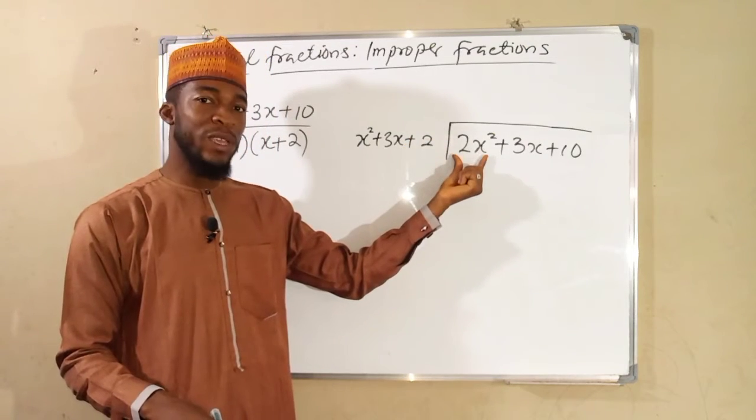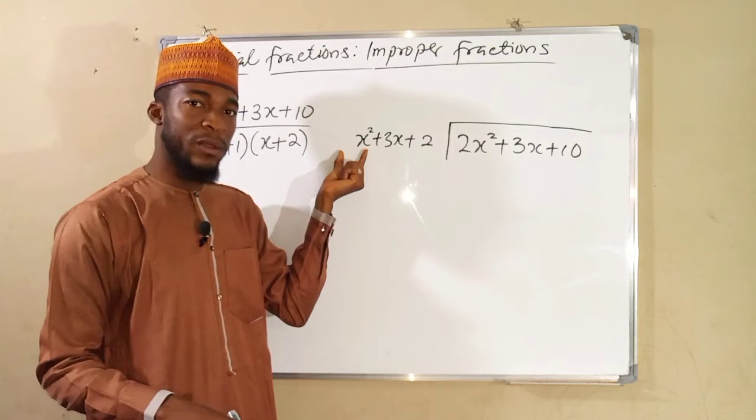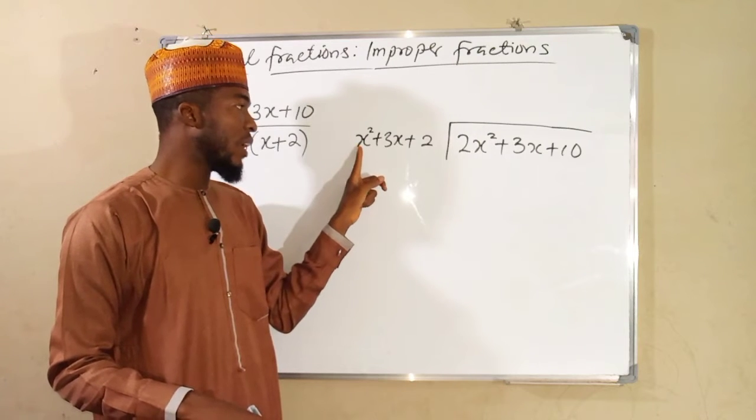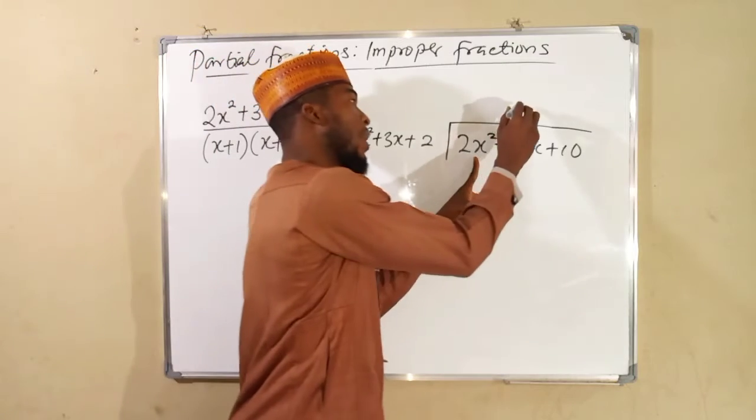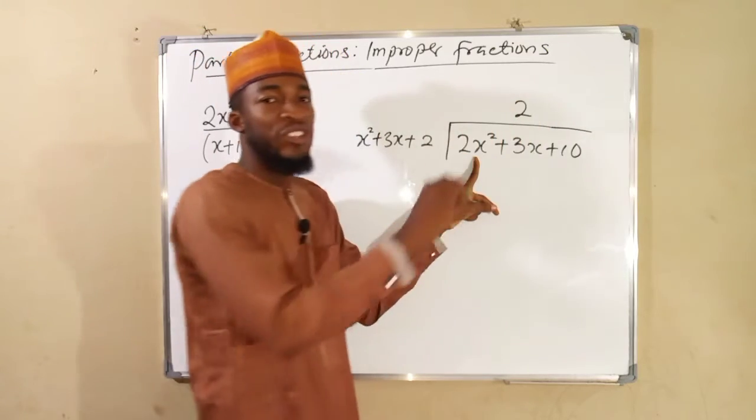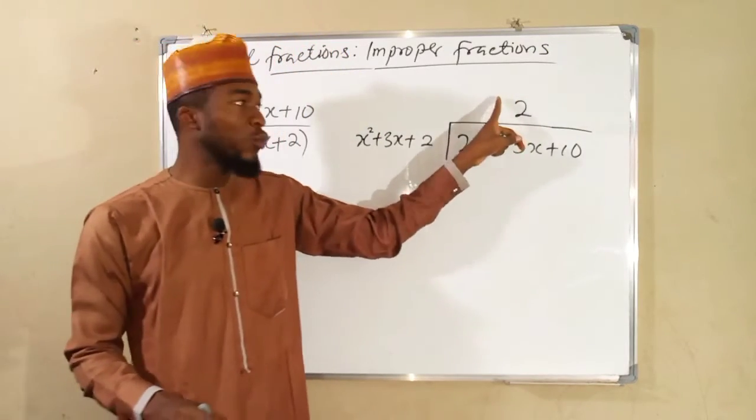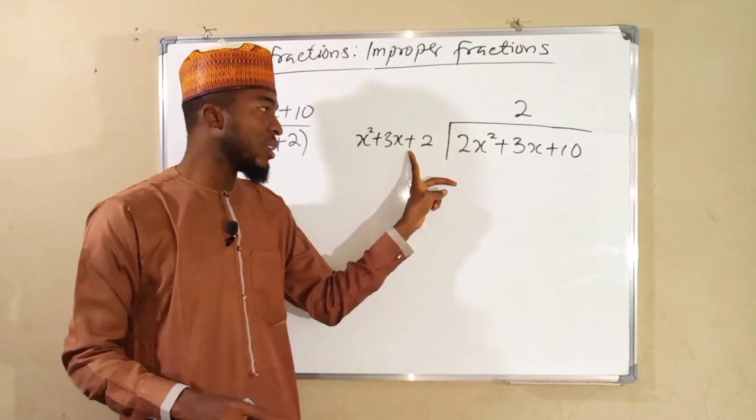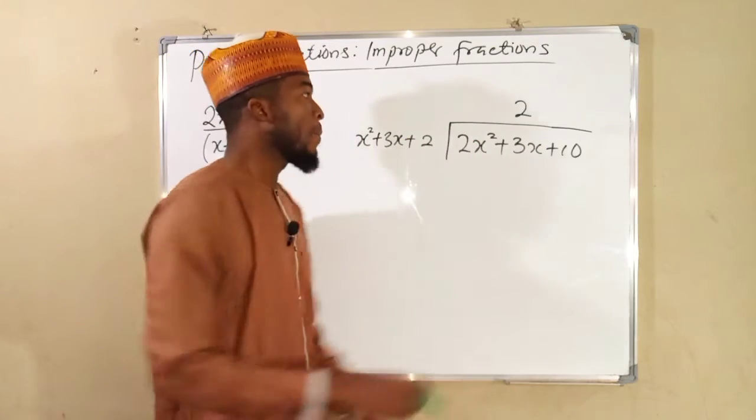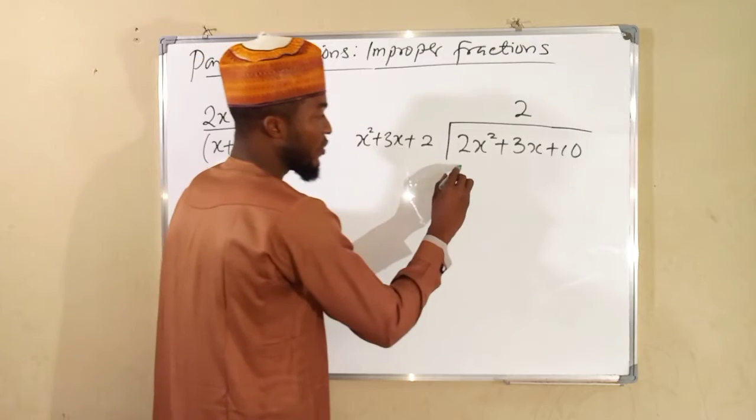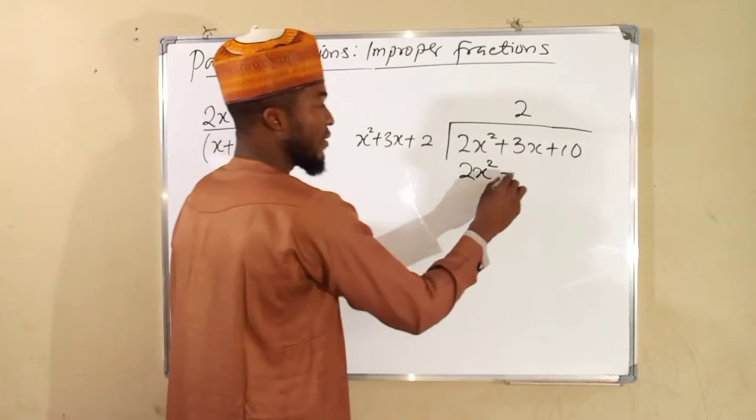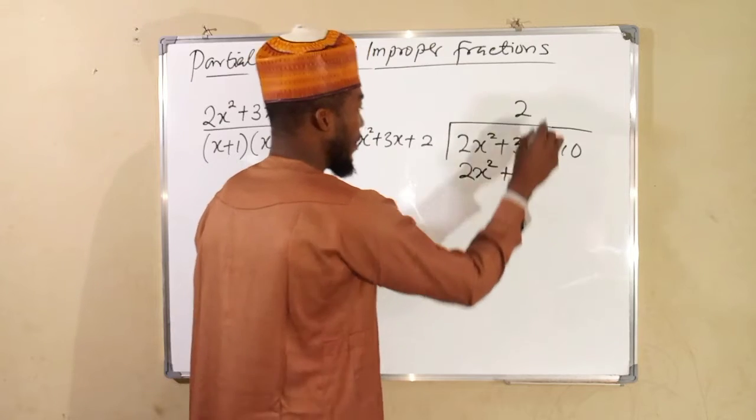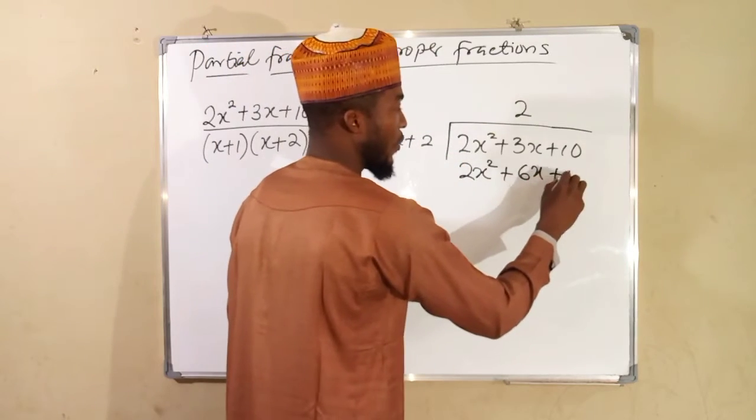We are going to use the first term here to divide the first term here. So we say x squared can go into 2x squared 2 times. And we write 2 here as our quotient. Then we use that 2 to multiply all this expression and align the result here. So 2 times x squared is 2x squared. Then 2 times 3x is 6x. Then 2 times 2 is 4.